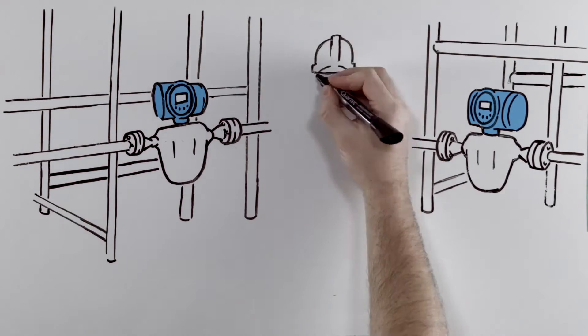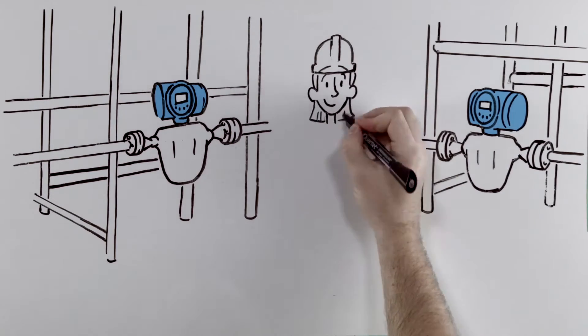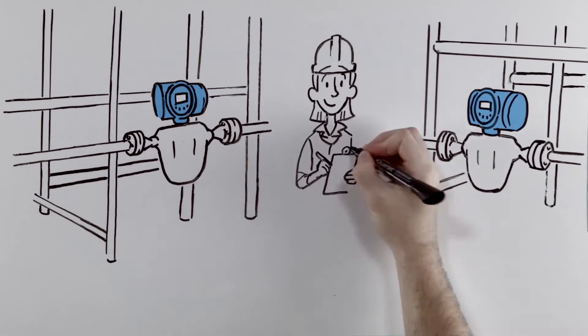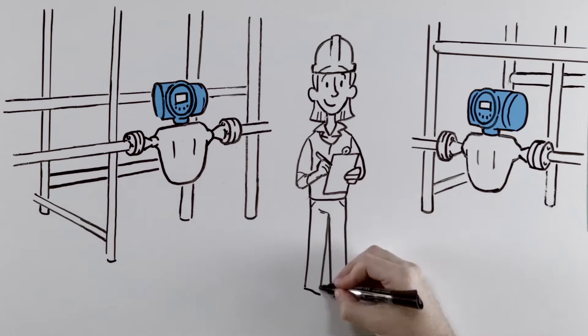This is Tina. Tina is an instrument engineer. Her job is to keep the plant's instruments running accurately, so her processes run smoothly and efficiently.